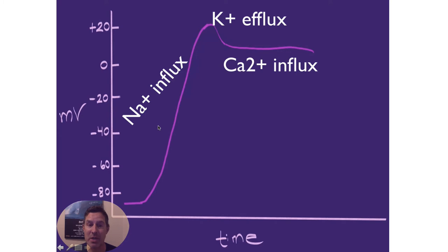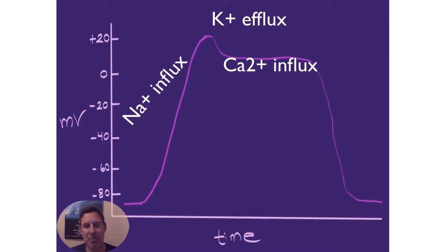So in review, we've had sodium influx depolarizes the cell up to positive 20, a slight repolarization event due to potassium efflux. And then we get what's known as the plateau phase, which is the result of calcium influx. And then we're going to complete the whole action potential due to the resumption of potassium efflux.